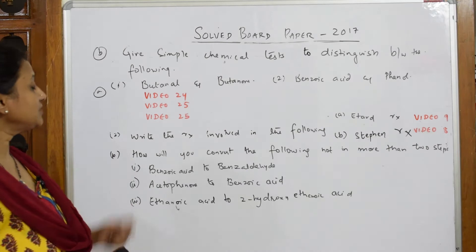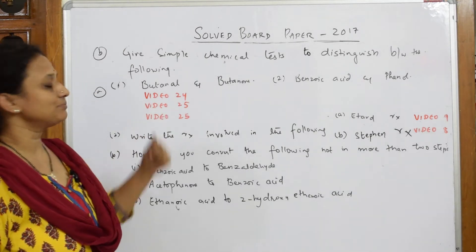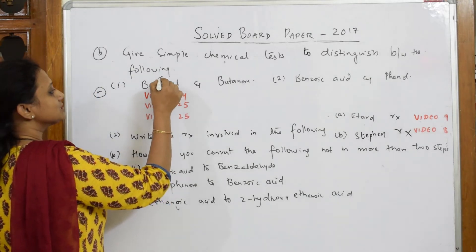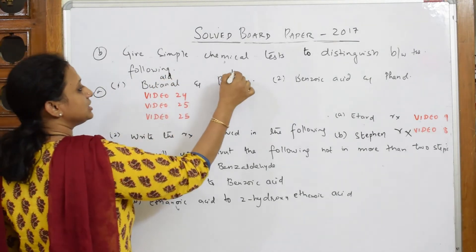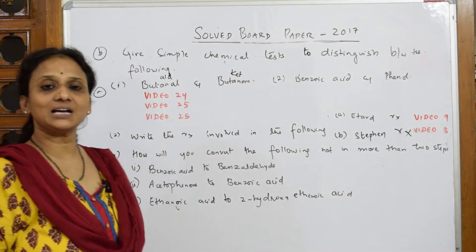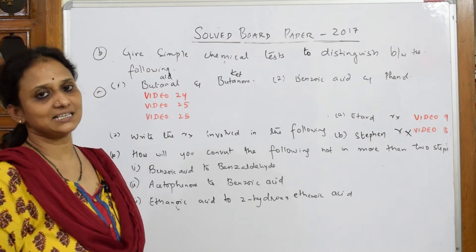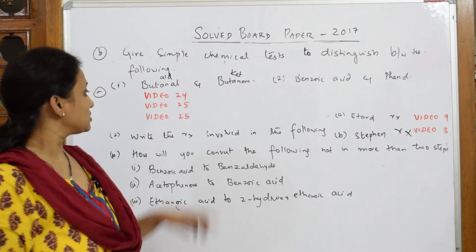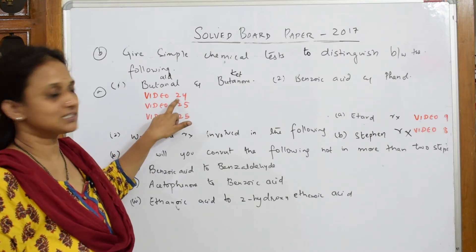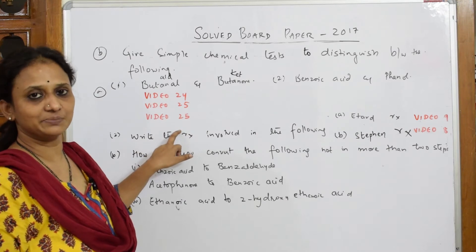Let us give simple tests to distinguish between butanol and butanone. Butanol is an aldehyde and butanone is a ketone. Aldehydes respond to which test? Tollens test, Fehling's test, as well as Benedict's test. I have done all three videos - this particular video covers Tollens test, this one has Fehling's, and this also has Benedict's test.